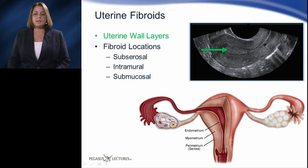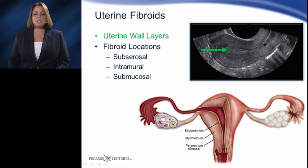The innermost layer of the uterus is the endometrium. It is comprised of two layers: the functional layer that builds up and is shed during the menstrual cycle, and the basal layer that is adjacent to the myometrium but is not shed during menses.